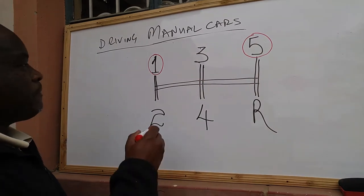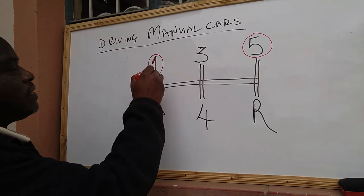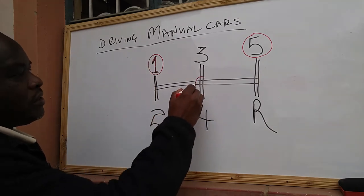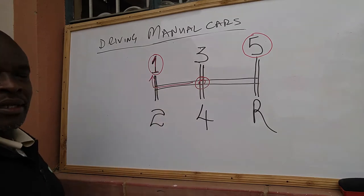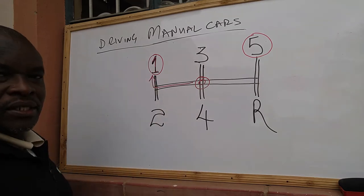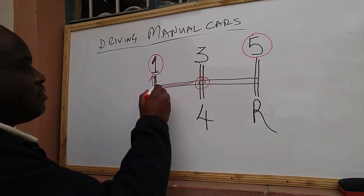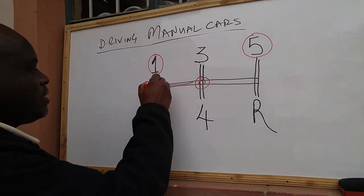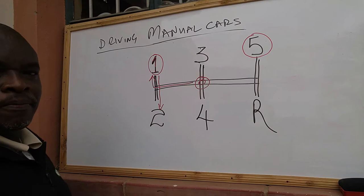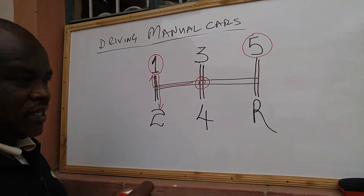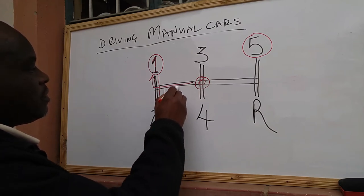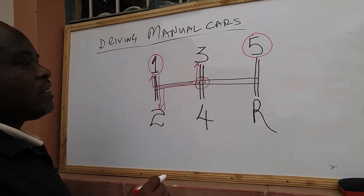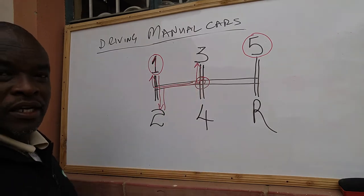When you're driving a car, you start with gear number one — your lever starts here and you shift it to gear number one. When you reach the point to change gear, you shift from gear number one to gear number two, then from gear number two all the way to gear number three, and the car is increasing in speed.